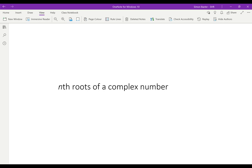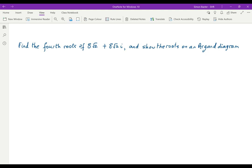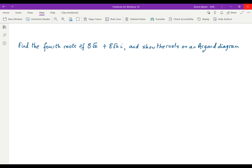The best way to do this is to look at an example. So let's suppose we are trying to find the fourth roots of the number 8√2 + 8√2i, and then we show these roots on an Argand diagram.